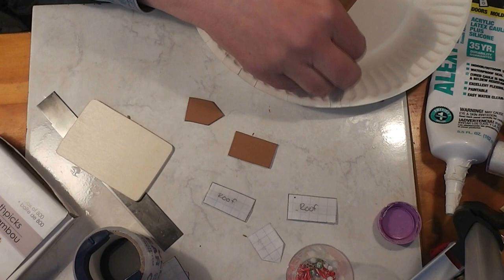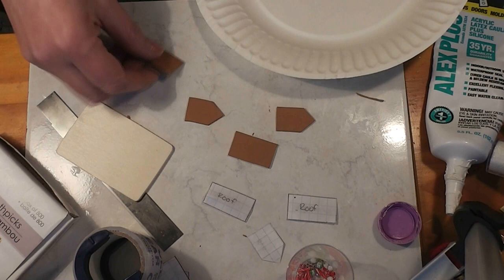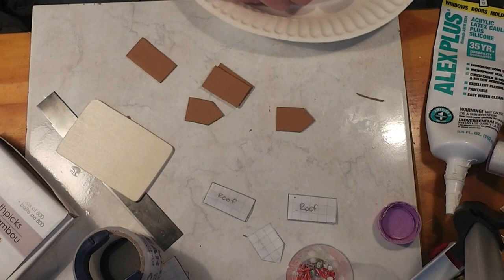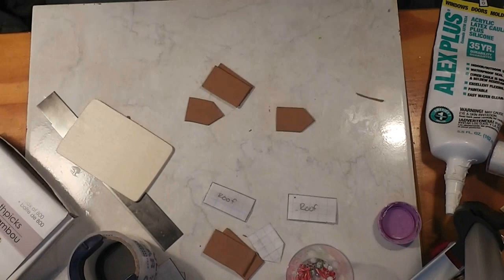So we are now all baked and fairly well cooled. Not completely, but I'm going to take these off the paper plate and I'm going to put the roof pieces aside. The roof pieces are bigger than the sides, so decide which are your roof pieces and those we're going to set off to the side for just a moment.